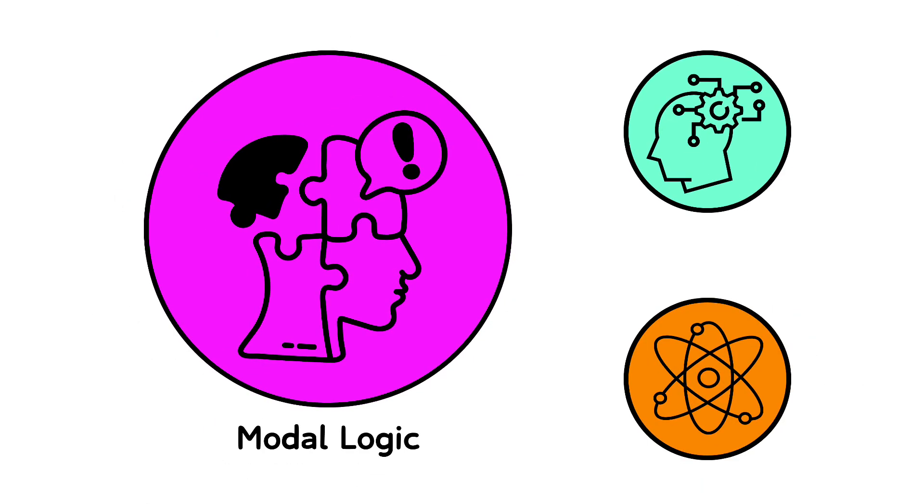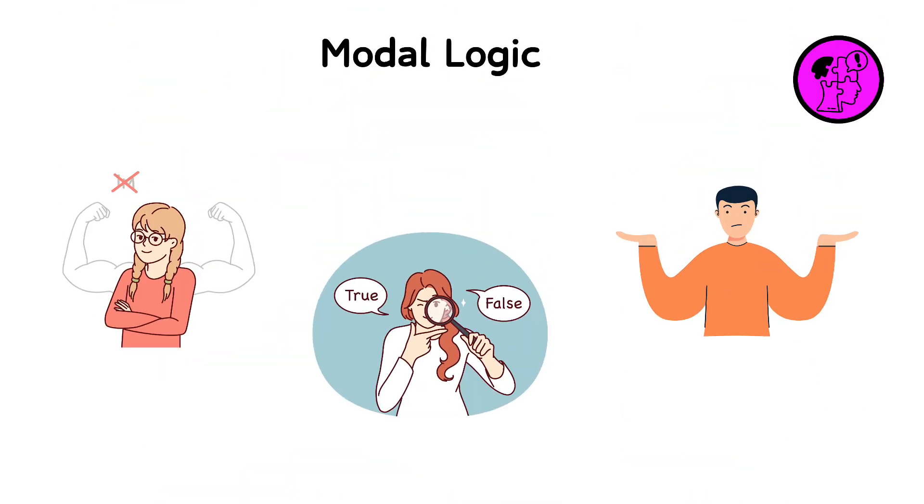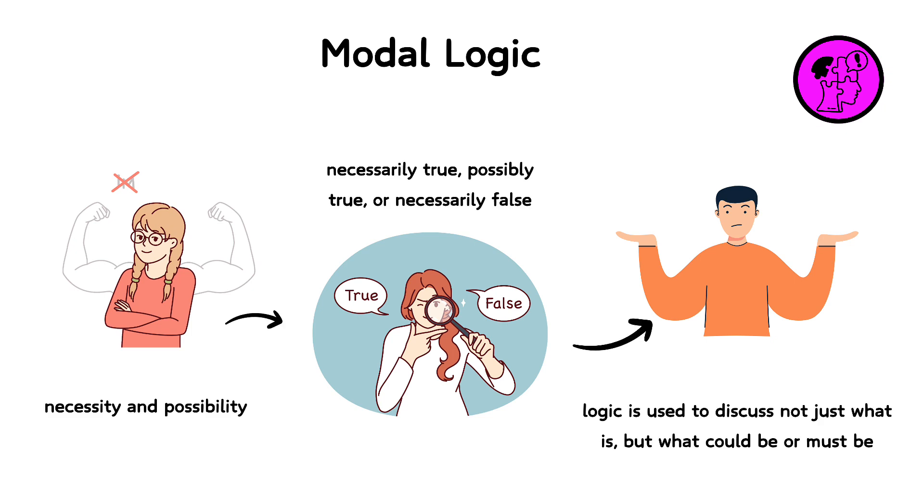Modal logic extends classical logic by introducing modes of truth, such as necessity and possibility. Instead of just true or false, statements can be necessarily true, possibly true, or necessarily false. This type of logic is used to discuss not just what is, but what could be or must be.